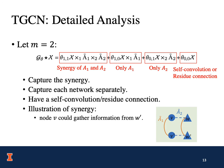We provide a detailed analysis about TGCN. Let m equal 2; then the tensor graph convolution can be written as an equation with three terms. In the first term, X is multiplied by both A1 and A2. In the second term, X is multiplied by A1. In the third term, X is not multiplied by any network. In summary, the tensor graph convolution can capture the synergy, capture each network separately, and also has a self-convolution or residual connection. To illustrate the synergy: we gather information from W-prime by first traveling from V to V-prime via A1, and then from V-prime to W-prime via A2.